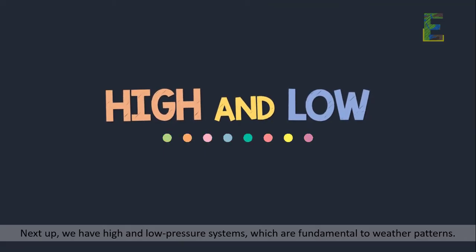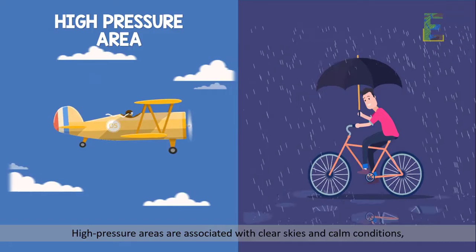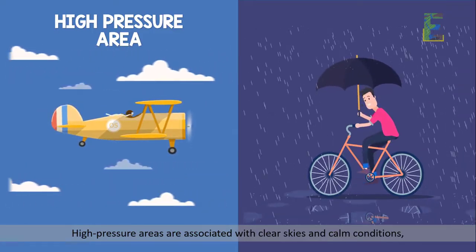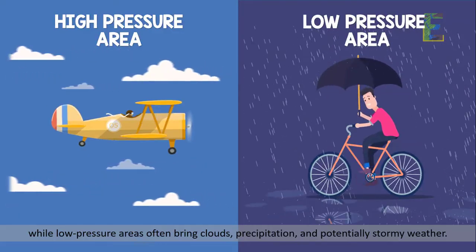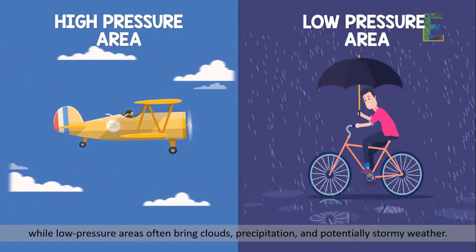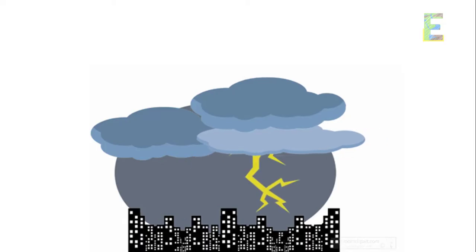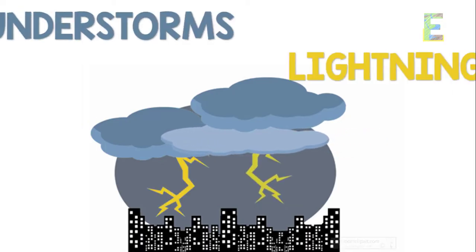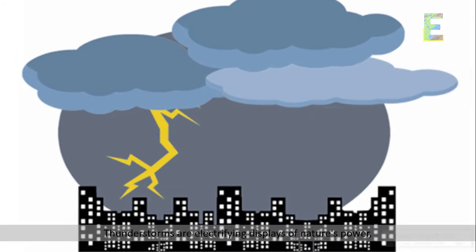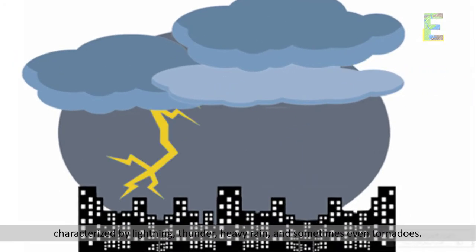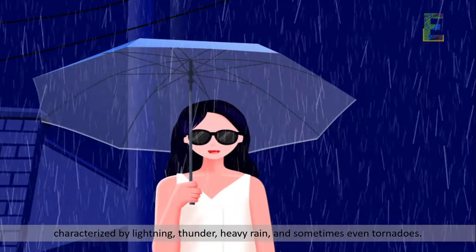Wind is a vital component of Earth's atmospheric circulation. Next up, we have high and low pressure systems, which are fundamental to weather patterns. High pressure areas are associated with clear skies and calm conditions, while low pressure areas often bring clouds, precipitation, and potentially stormy weather.